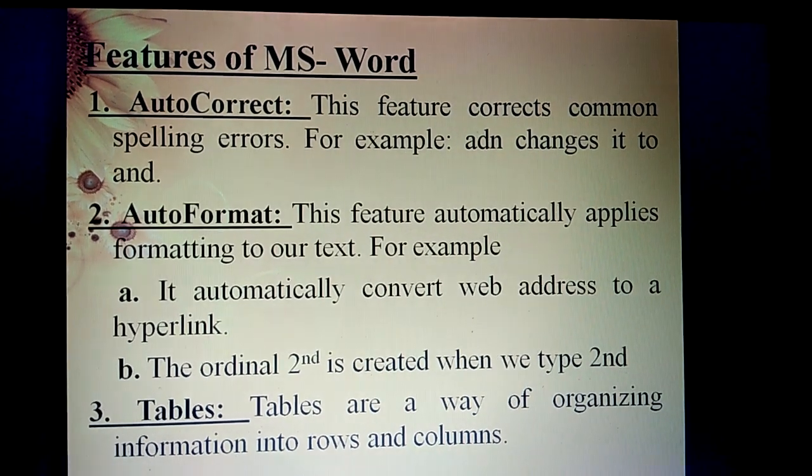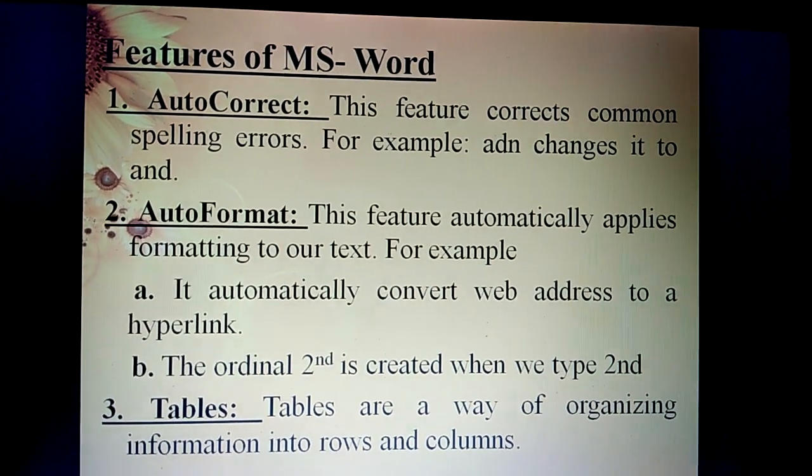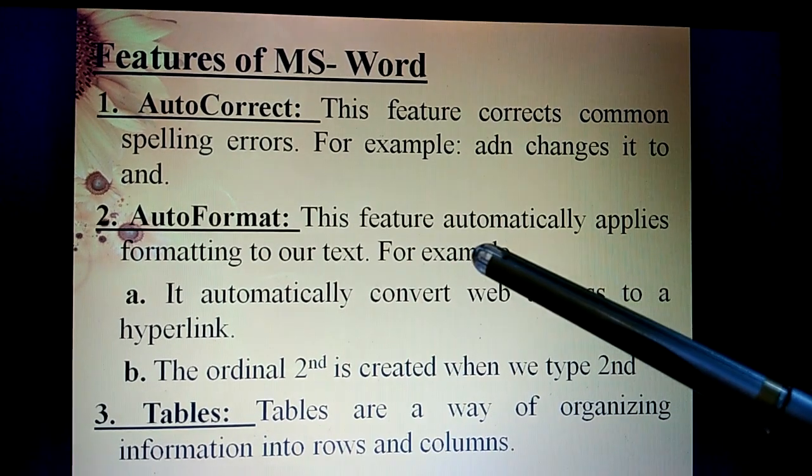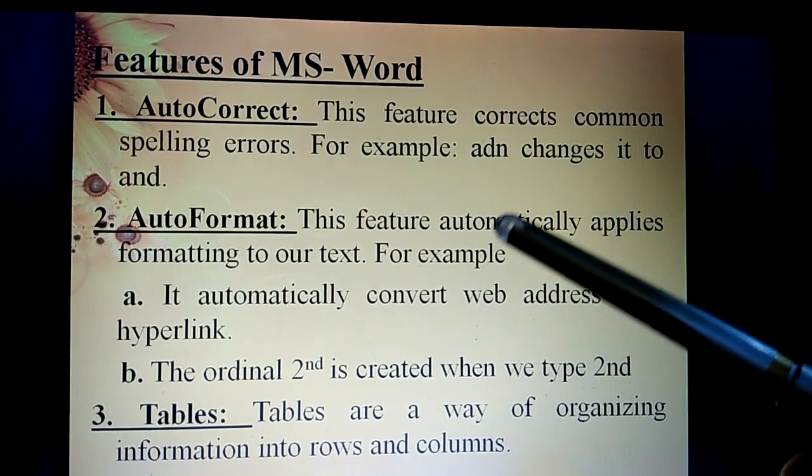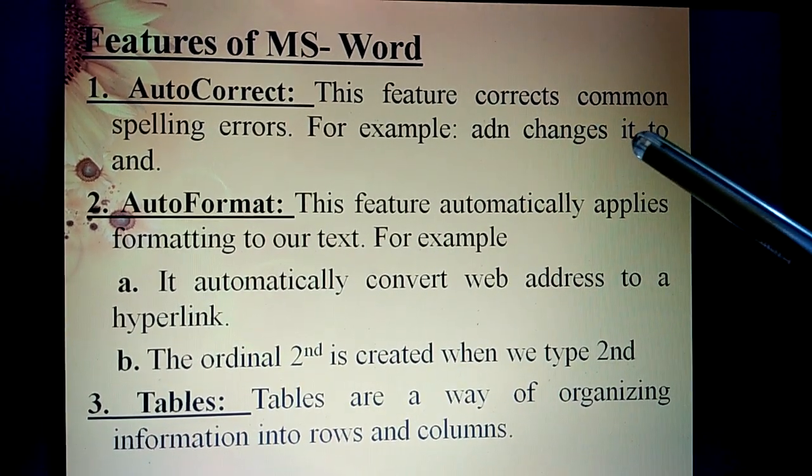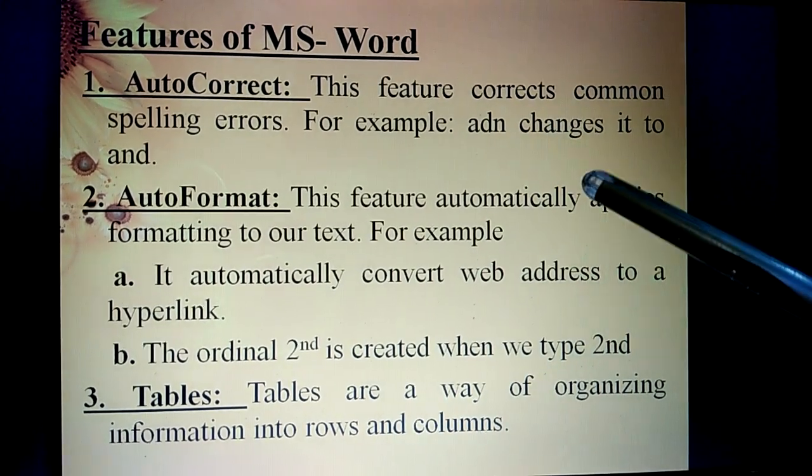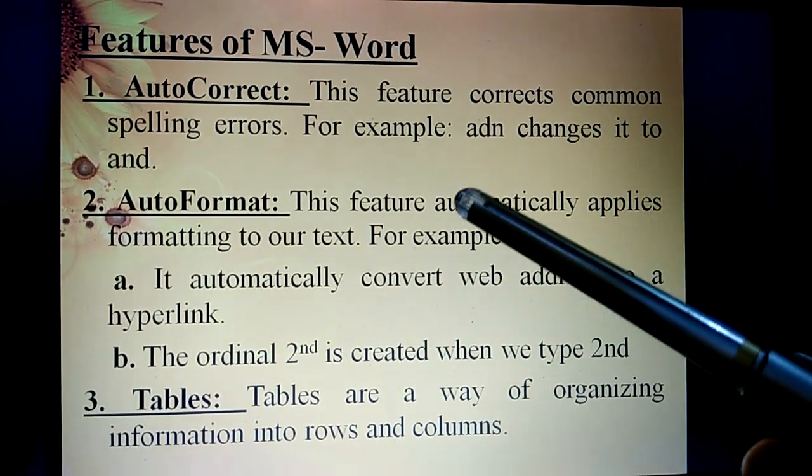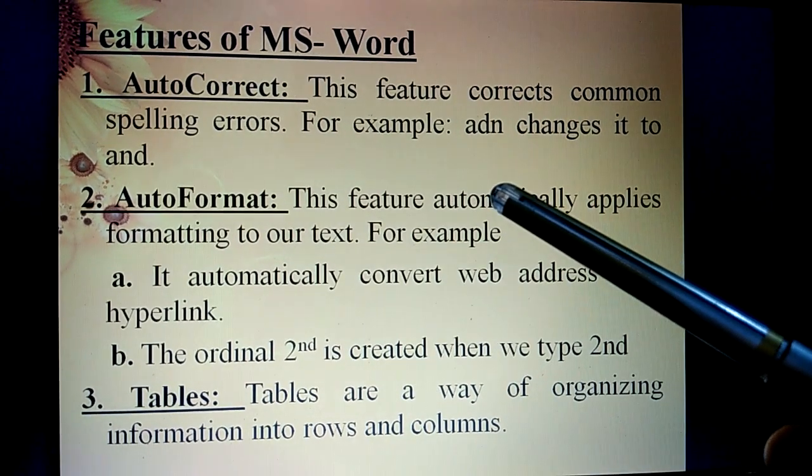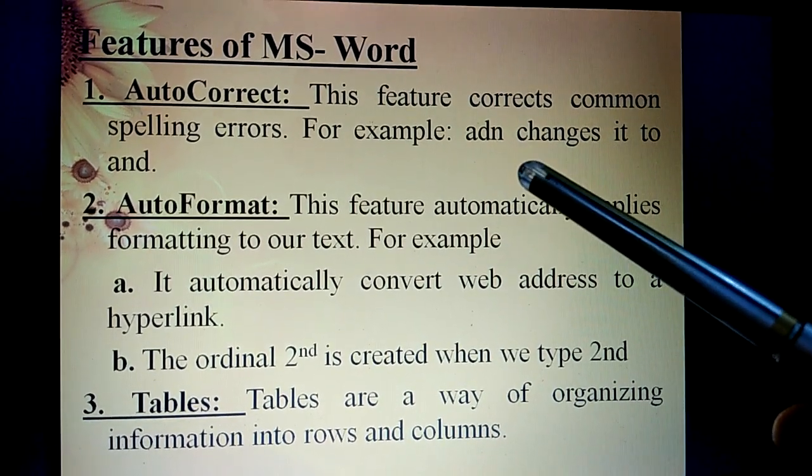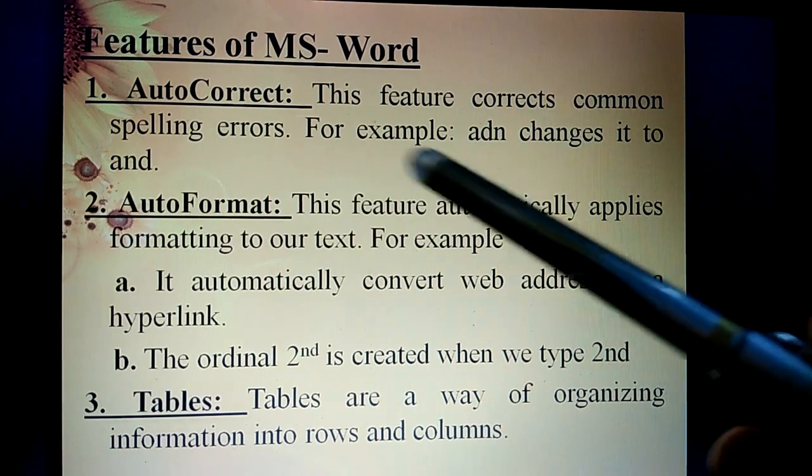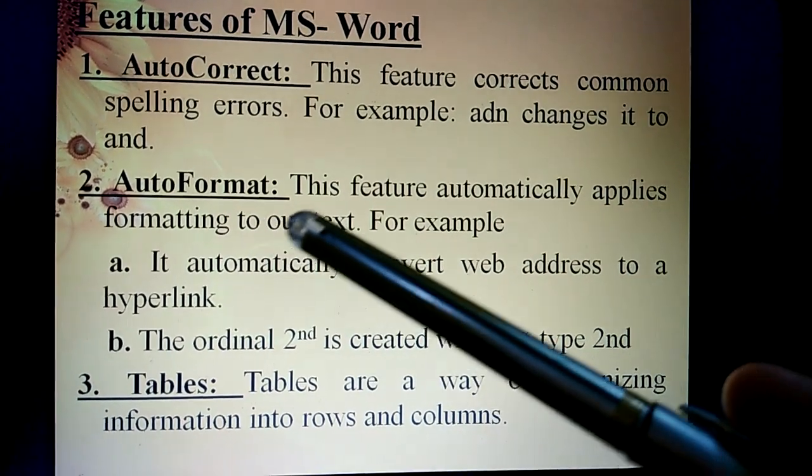Now, some features of MS Word. First is AutoCorrect. This feature corrects common spelling errors. For example, if you accidentally write ADN, it changes it to AND.